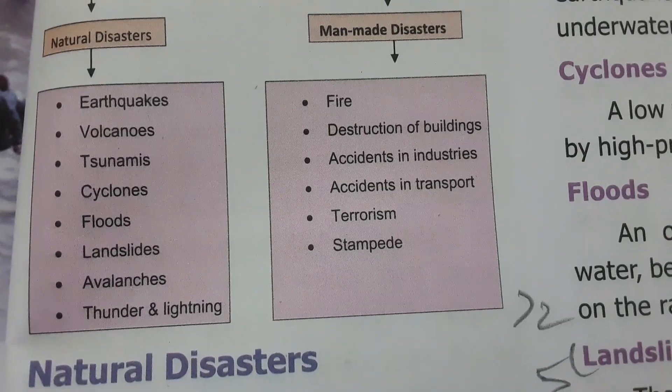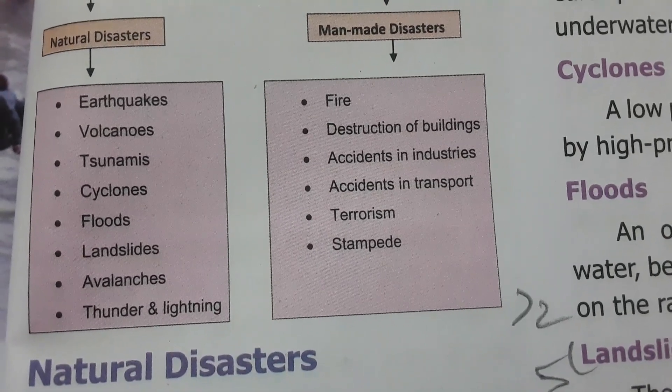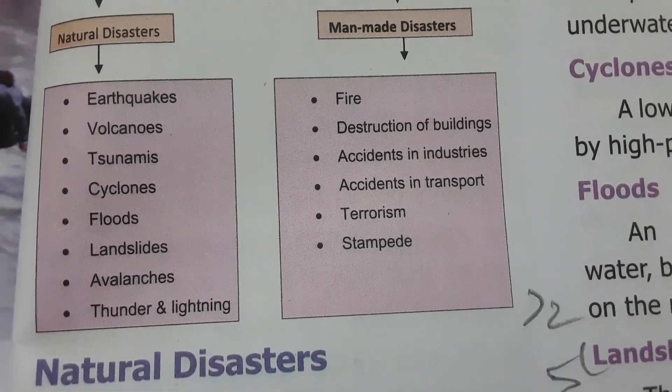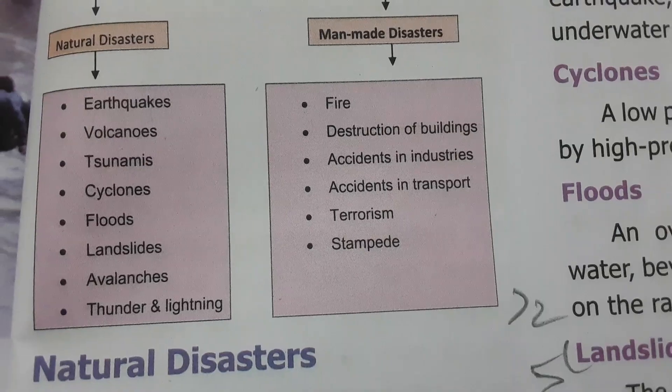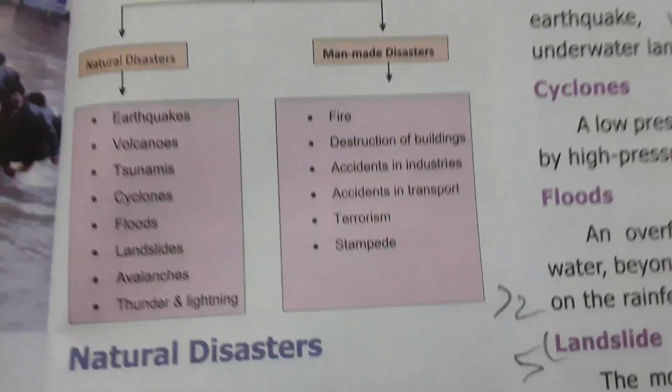Under Man-made Disasters, which are also called artificial disasters: fire, destruction of buildings, accidents in industries, accidents in transport, terrorism, and stampedes.